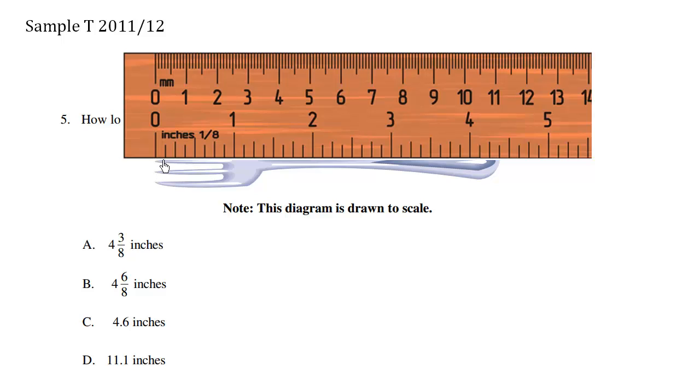We align this zero reference point over here with the tip of the fork. And as we count 1, 2, 3, 4 inches, it's going to be 4, not 11.